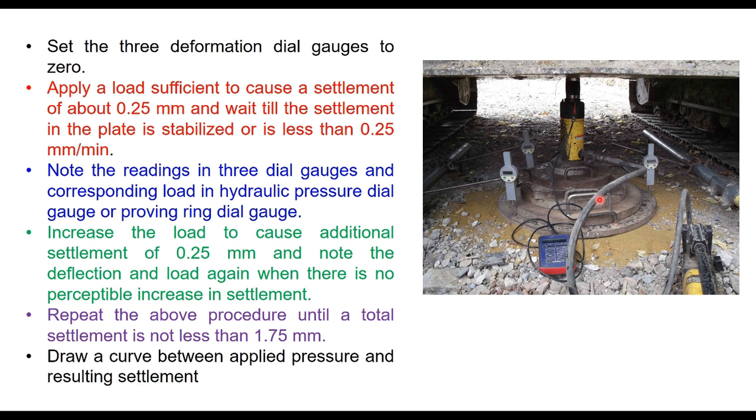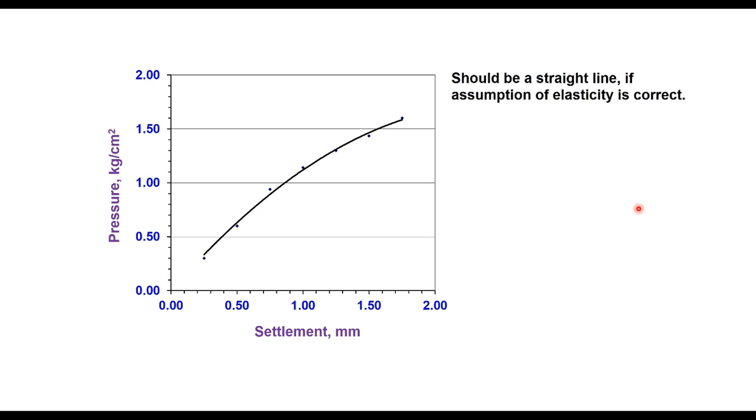Repeat the above procedure until total settlement is not less than 1.75 millimeter. Then draw a curve between applied pressure and resulting settlement. Ideally this curve should be a straight line because we assume that the soil is elastic in nature, but actually the soil is not elastic and therefore it has some convexity upward. We find out the load or pressure corresponding to 1.25 millimeter settlement.